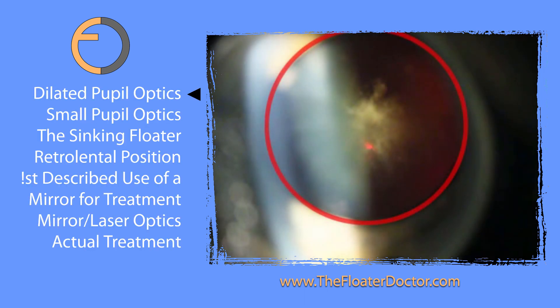The pupil is widely dilated — shown here in red — and is probably about 9 millimeters or so, which is very large. The whitish floater here is large, but light could get around it, and it would partially obstruct the vision. It would be a real annoyance and a distraction.